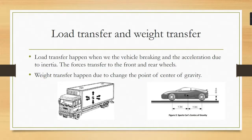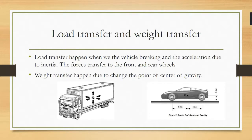Here you can see two different models — one is a sports car and another one is a lorry. In the sports car, the center of gravity is situated at a very low level. In the lorry, the center of gravity height is very high, so the lorry can't go to high speed. The sports car can reach high speed because there is no risk of rolling, as the center of gravity is at a very low level.